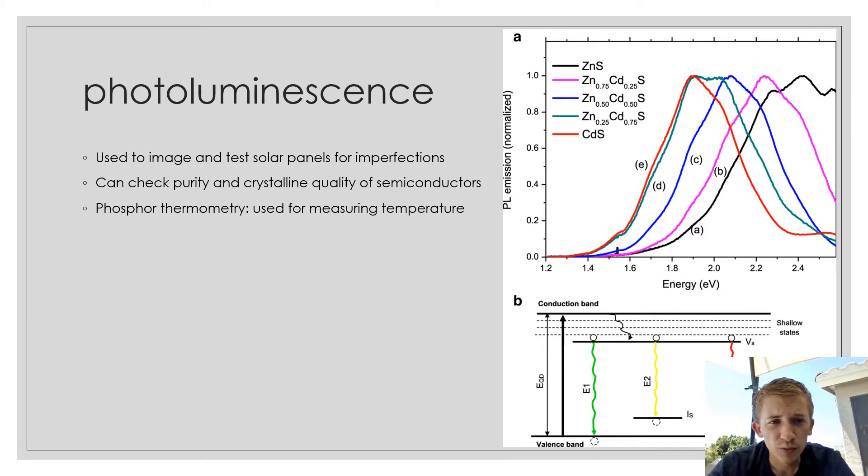Depending on the different material that you have, the photoluminescence is going to give off different colors depending on the conduction band. This is used to image and test solar panels for imperfections. It can be used to check the quality of the crystalline structures of semiconductors, and it can also be used for phosphor thermometry, used for measuring temperature.